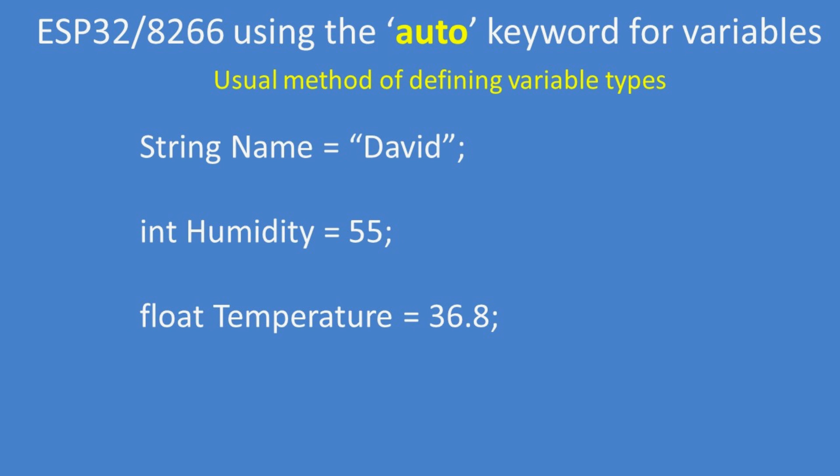Normally when defining variable types, we put the type—string, integer, floating point, char—in front of the variable name. So string name equals David, integer humidity equals 55, float temperature equals 36.8. Fairly straightforward.